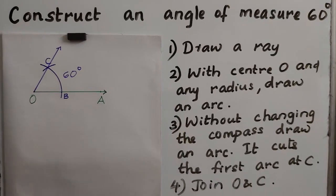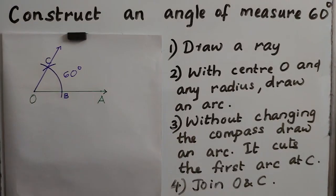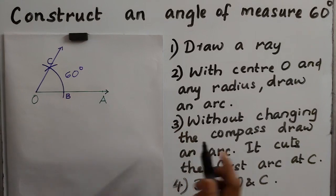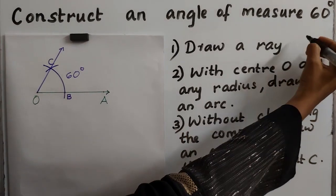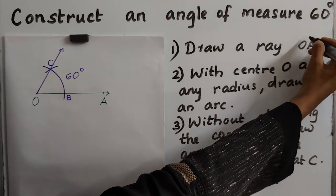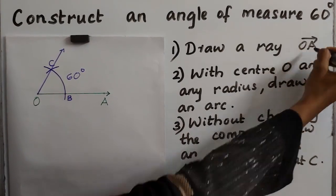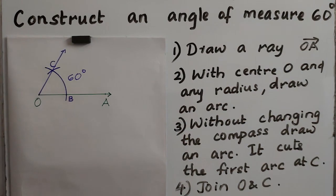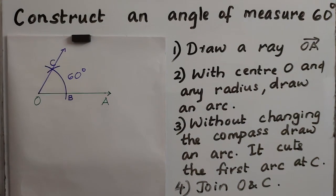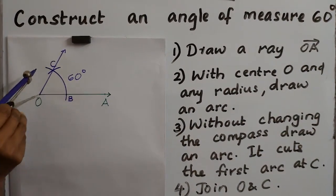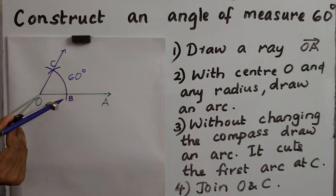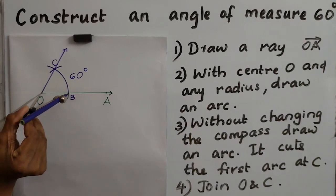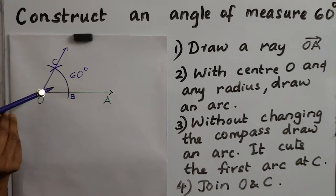To recap: the first step is to draw a ray OA. The second step is with center O and any radius, draw an arc. It cuts OA at B.